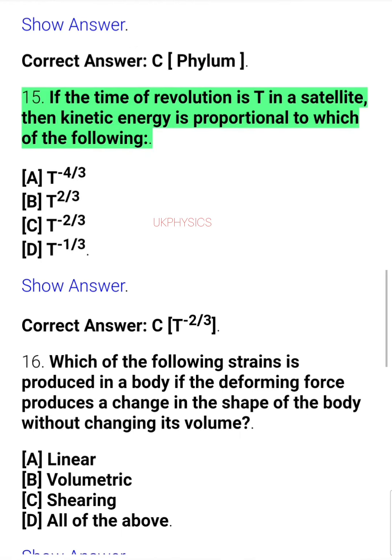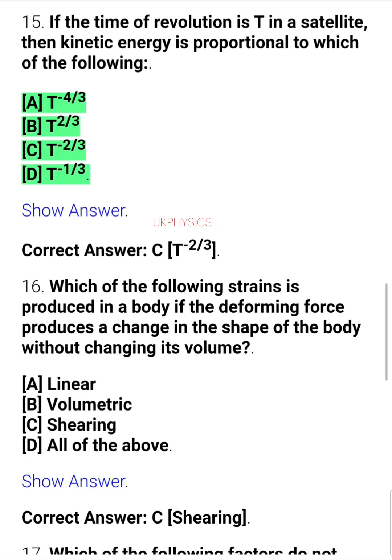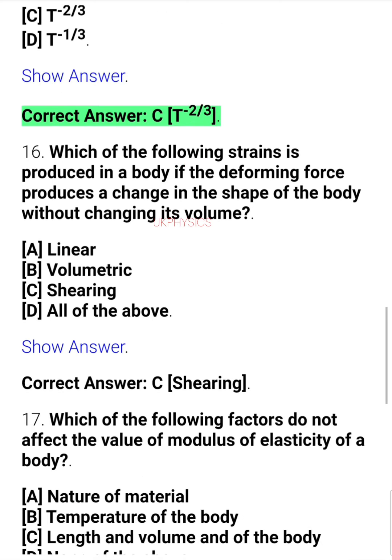Question 15. If the time of revolution is T in a satellite, then kinetic energy is proportional to which of the following? A. T to the power of minus 4/3, B. T to the power of 2/3, C. T to the power of minus 2/3, D. T to the power of minus 1/3. Correct answer: C. T to the power of minus 2/3.